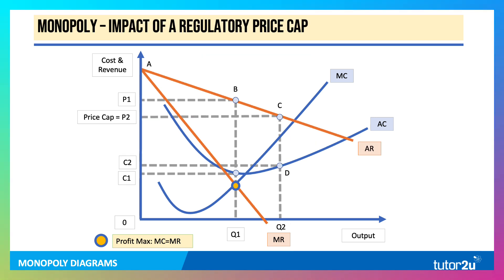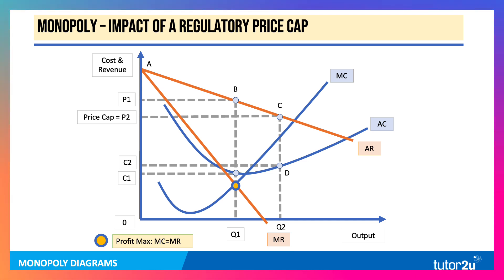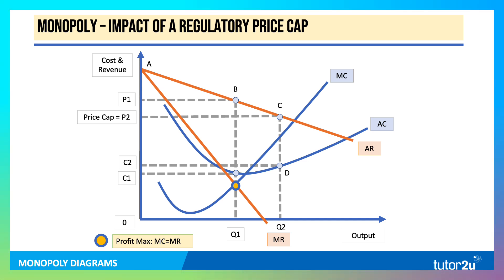Sometimes monopolies are subject to regulatory price caps by an industry regulator. The price cap needs to be set below the normal profit-maximising price, which initially was P1, so I've set it at P2. If you set the price at P2, you have an expansion of demand from Q1 to Q2, moving down the demand curve from point B to C. The monopoly can still make a profit — the profit is now P2, C, D, C2 — but the total profit has gone down. Crucially, a price cap could lead to an increase in consumer surplus.